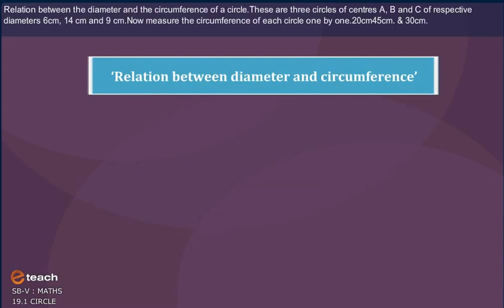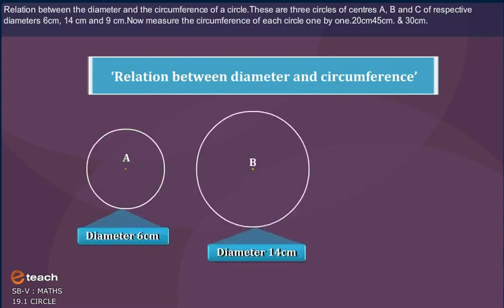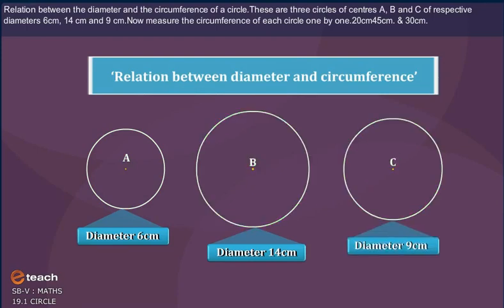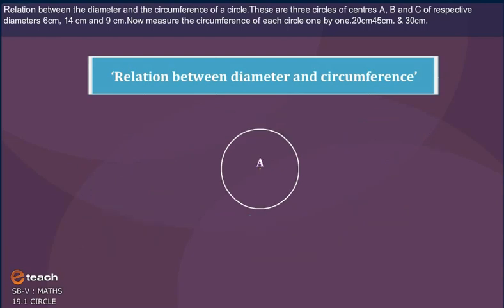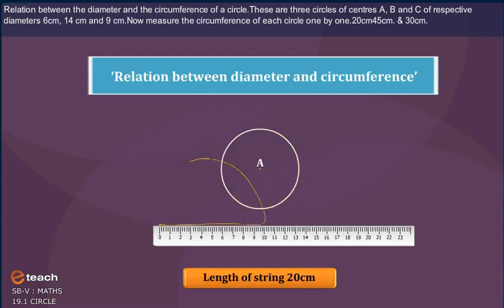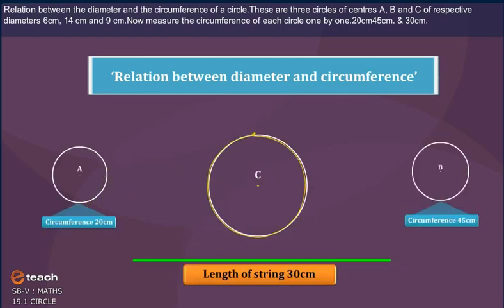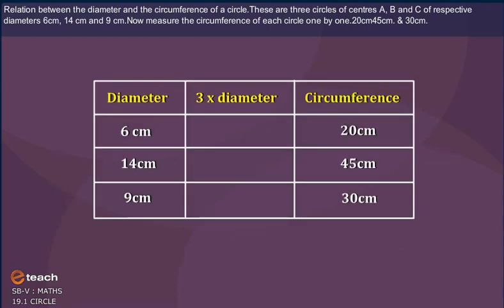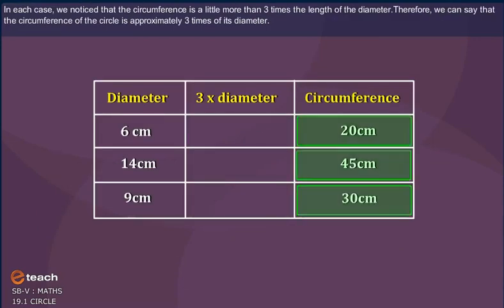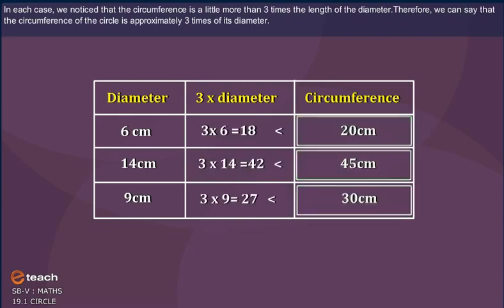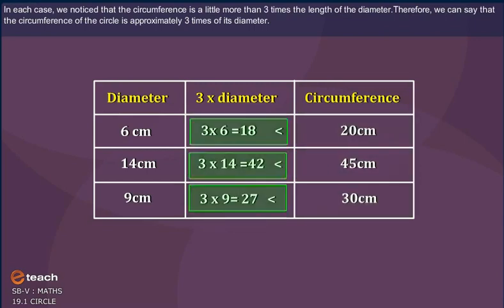Relation between the diameter and the circumference of a circle. These are three circles of centers A, B and C of respective diameters 6 cm, 14 cm and 9 cm. Now, measure the circumference of each circle one by one. 20 cm, 45 cm and 30 cm. In each case, we noticed that the circumference is a little more than three times the length of the diameter.